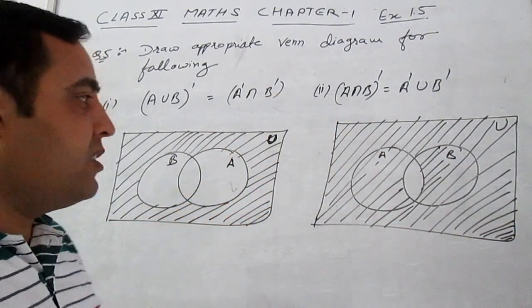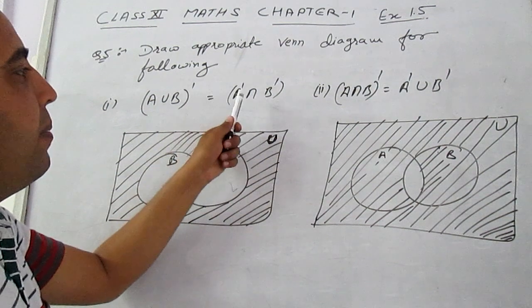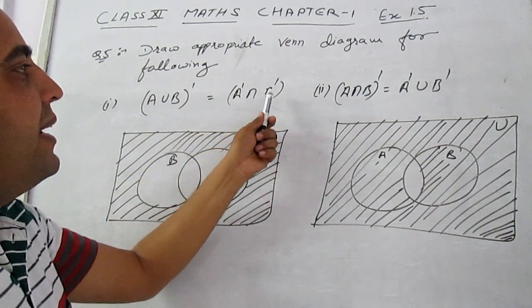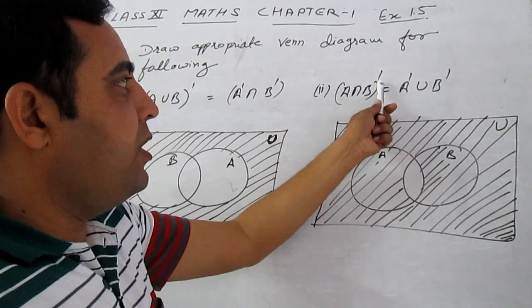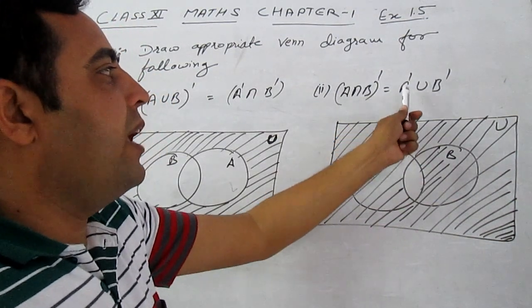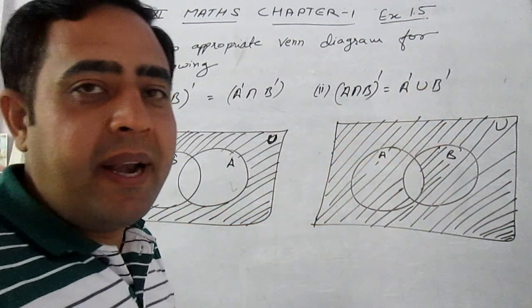We know that from De Morgan's law, A union B complement is equal to A complement intersection B complement, and A intersection B complement is equal to A complement union B complement.